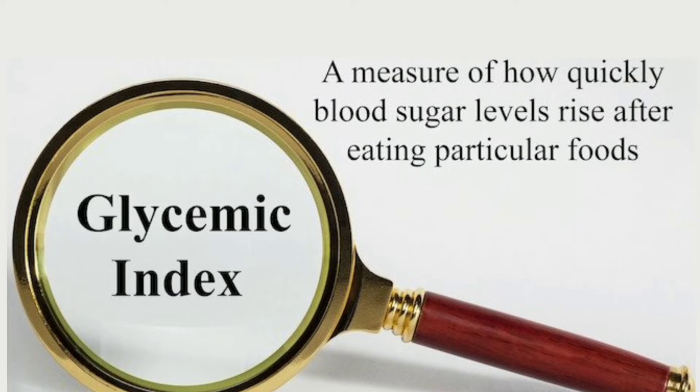Glycemic index, or GI as it is commonly known, talks about how fast a food is digested in our stomach and the potential the food has to raise our blood sugar levels — or the speed at which it raises our blood sugar levels.